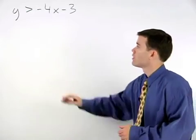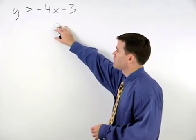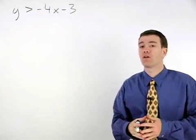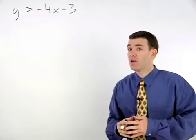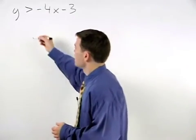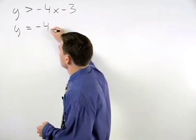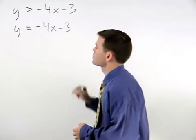To graph the inequality y is greater than negative 4x minus 3, we start by graphing what is called the boundary line, and in this case that's y equals negative 4x minus 3.